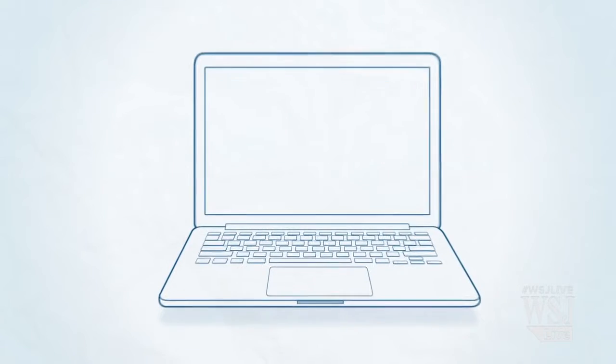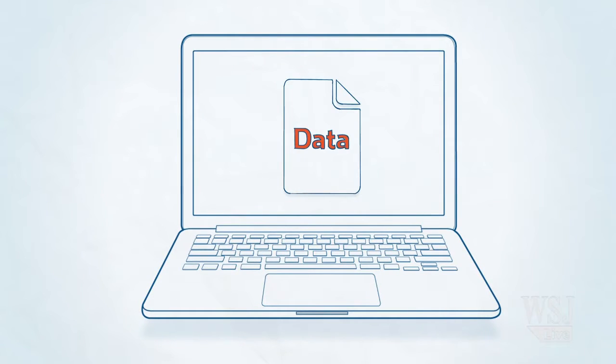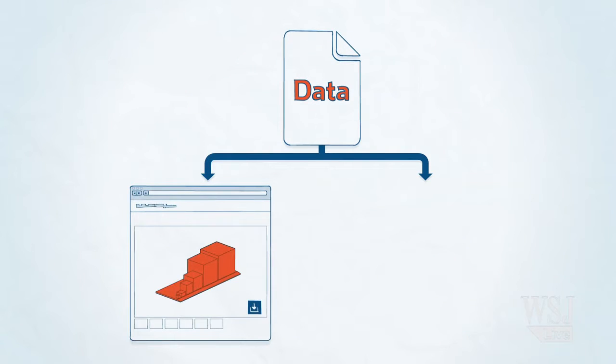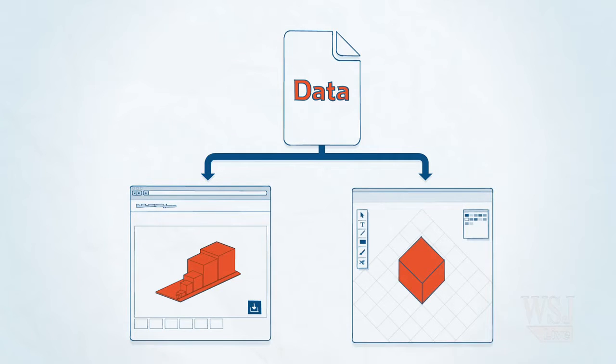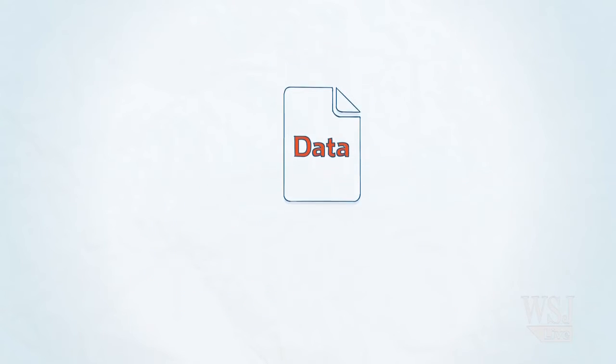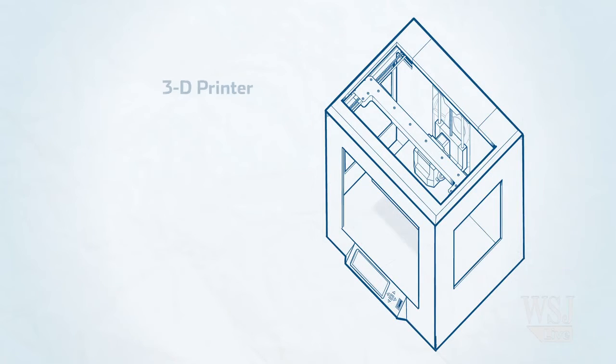3D printed objects start life as a data file. This could come from a hobbyist site like Thingiverse or something you've created yourself with the right software. The file is transferred via USB, SD, or Wi-Fi to the printer, where final size and printing settings can be adjusted.